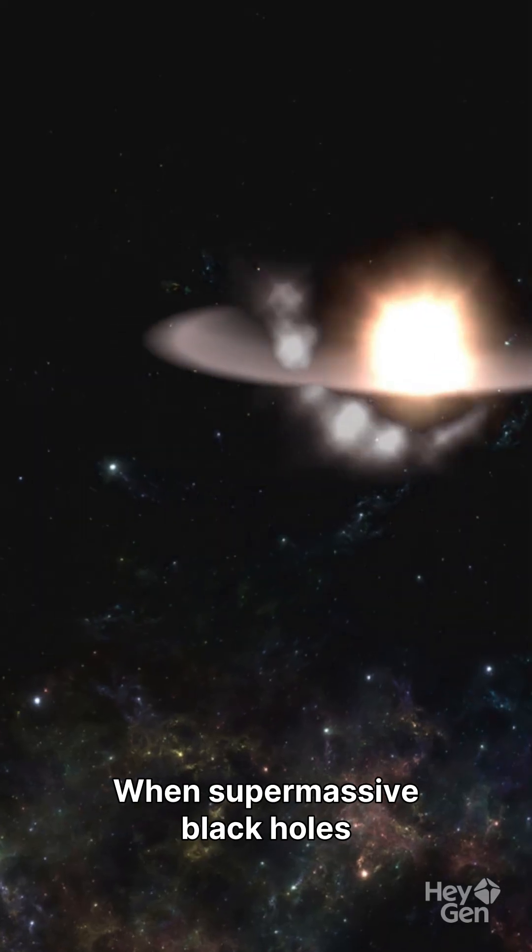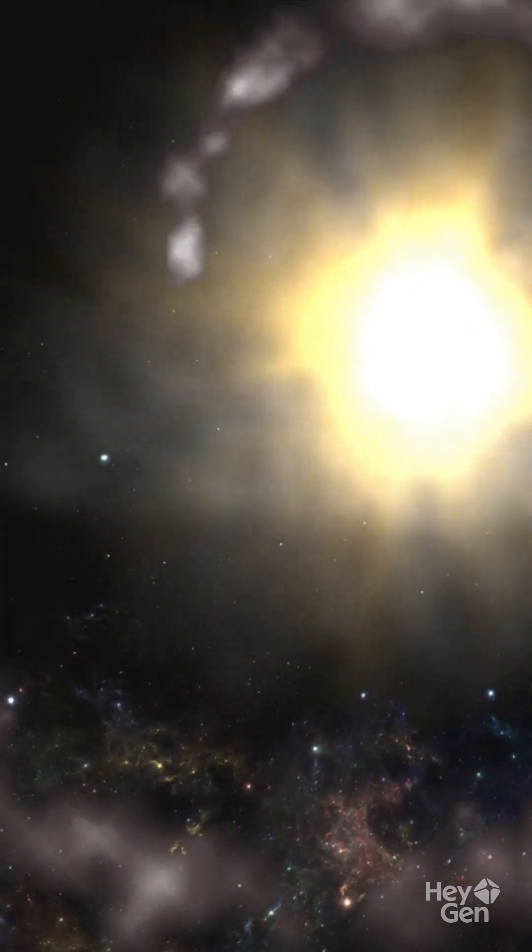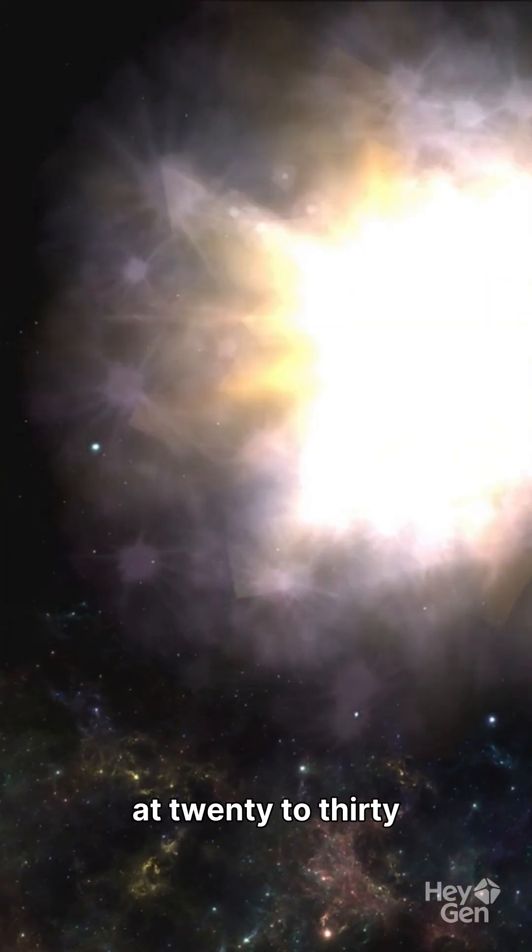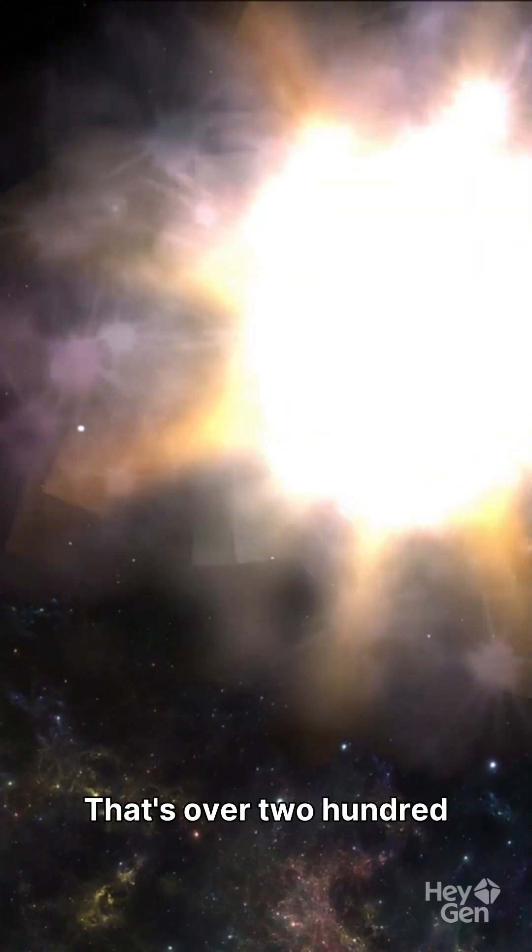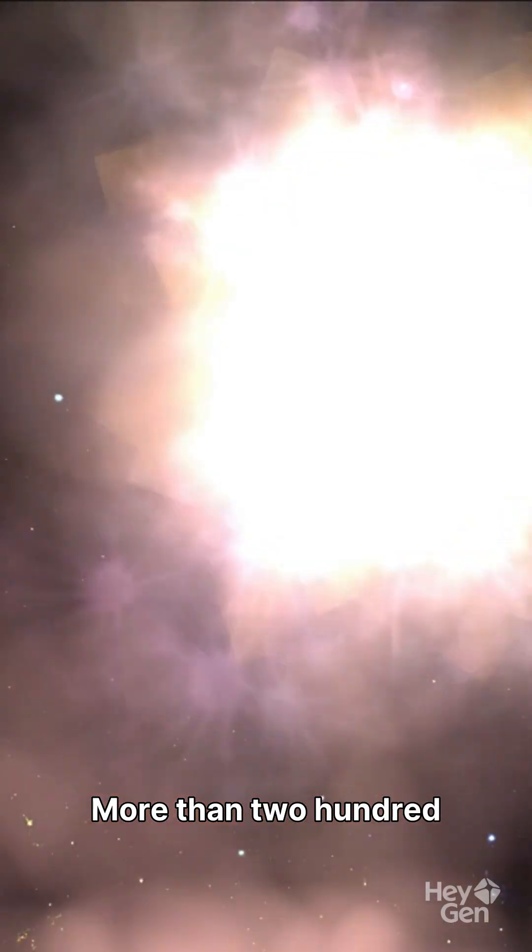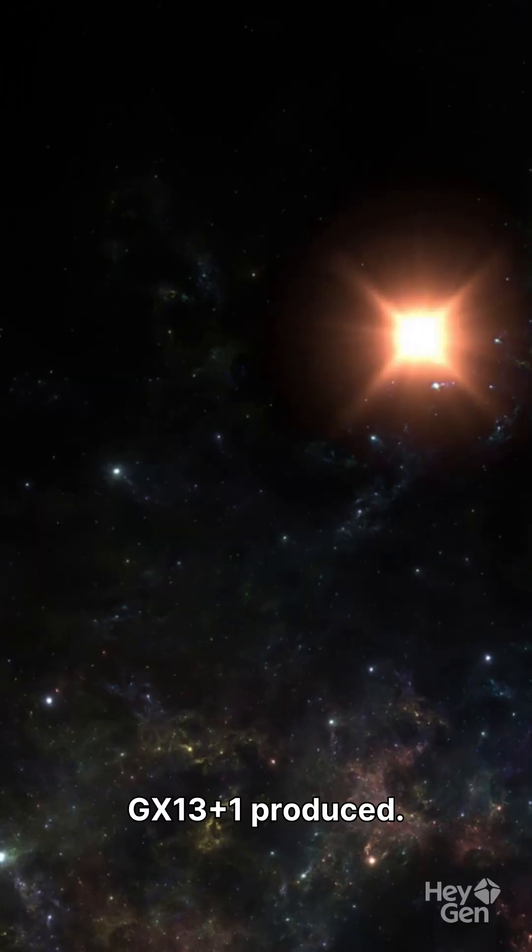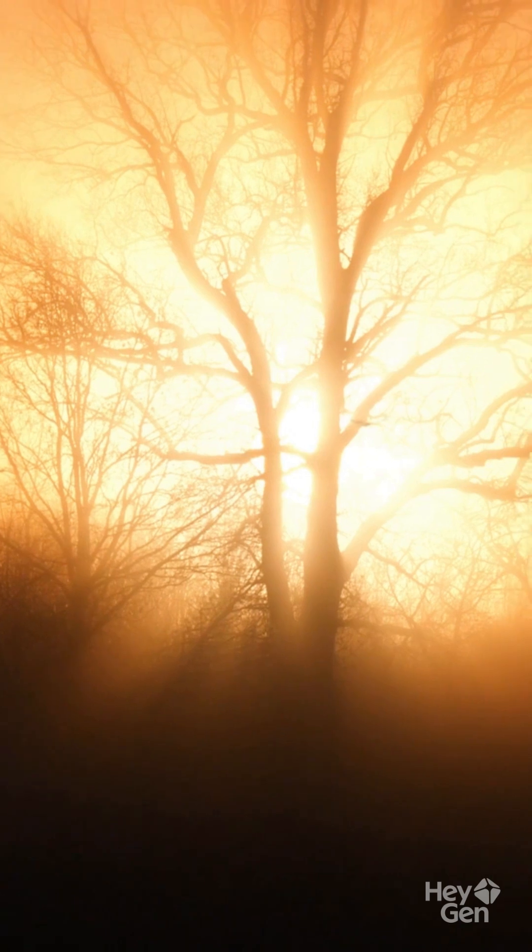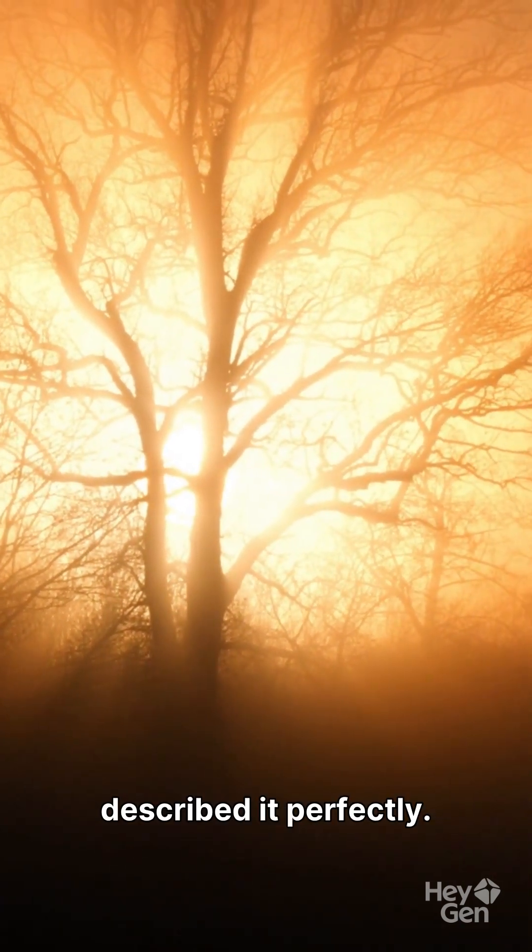When supermassive black holes reach the Eddington limit, their winds scream outward at 20 to 30% of light speed. That's over 200 million kilometers per hour, more than 200 times faster than what GX13 plus 1 produced.